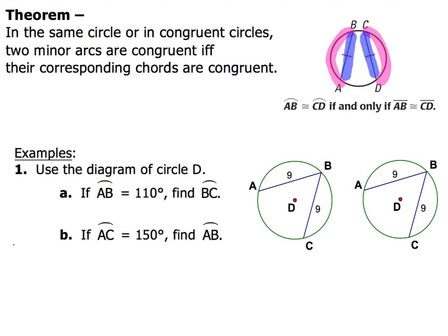Let's take a look at our first example. We've got two of them here, A and B. Use the diagram for circle D. For A, it says if AB equals 110, so I'm going to write that in. I'm going to find what BC is. This segment and this segment are both the same, which means the arcs are also going to be identical. So BC is going to be 110 degrees also. Not too bad, pretty straightforward.